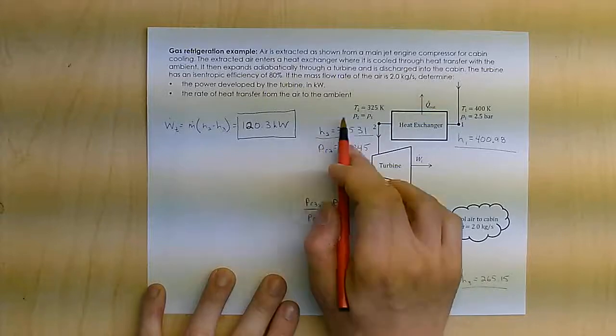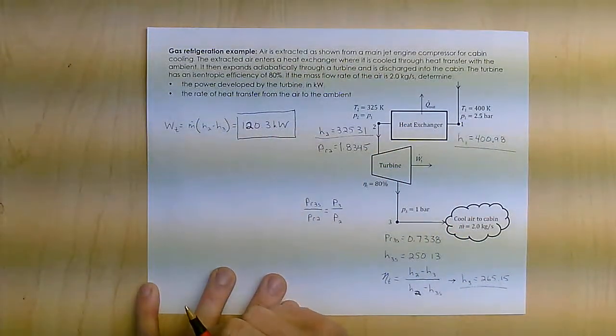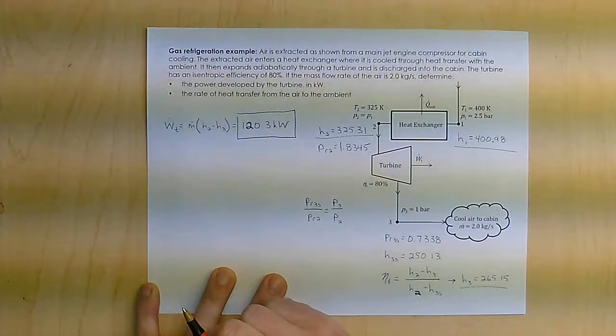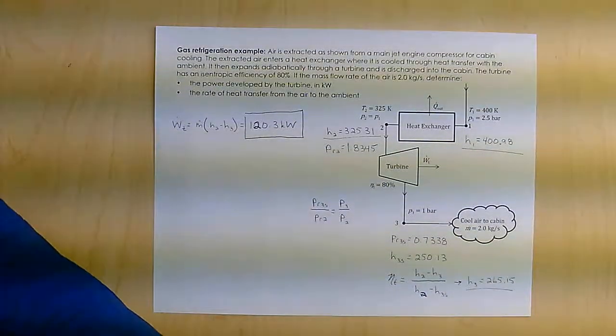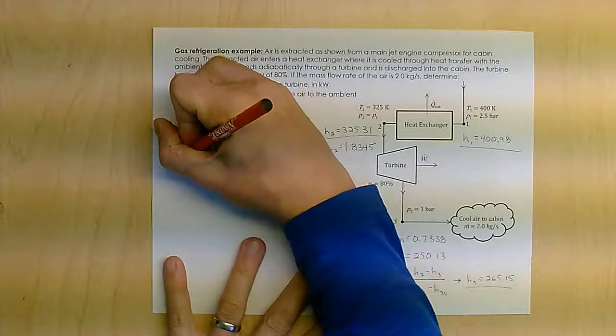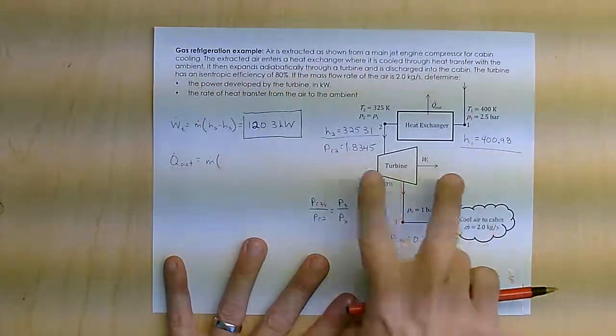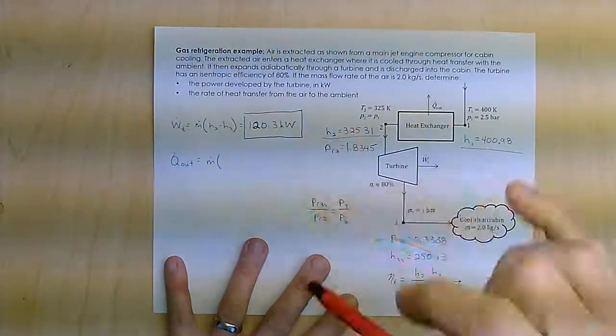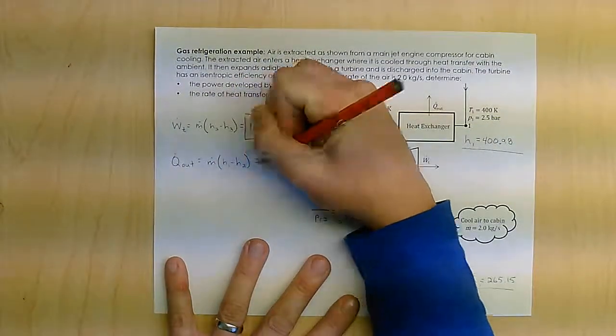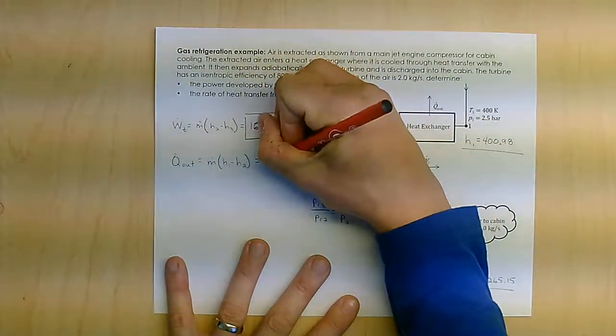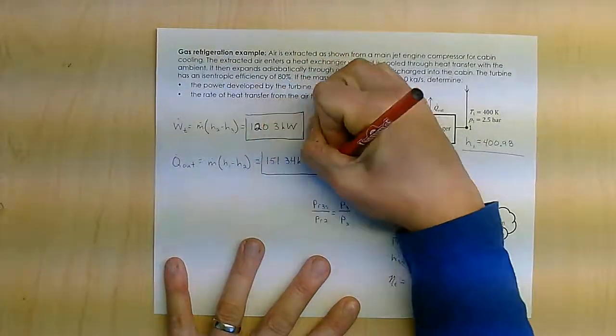The other thing I'm trying to do is find the heat transfer out. And that would be Q out is basically the mass flow rate times H1 minus H2, which equals 151.34 kilowatts out.